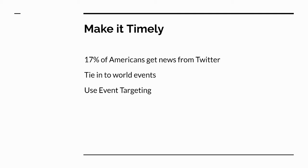Make it timely. With nearly 20% of Americans getting their news from Twitter, one key to success is timely tweets. With so many users in tune with what is happening in the moment, you can take advantage by being part of the moment as well. You can tie it to a holiday that's happening now with event targeting, whatever you want to do. You can use Twitter yourself to monitor the world's events and discover opportunities to tie your brand into what's going on.